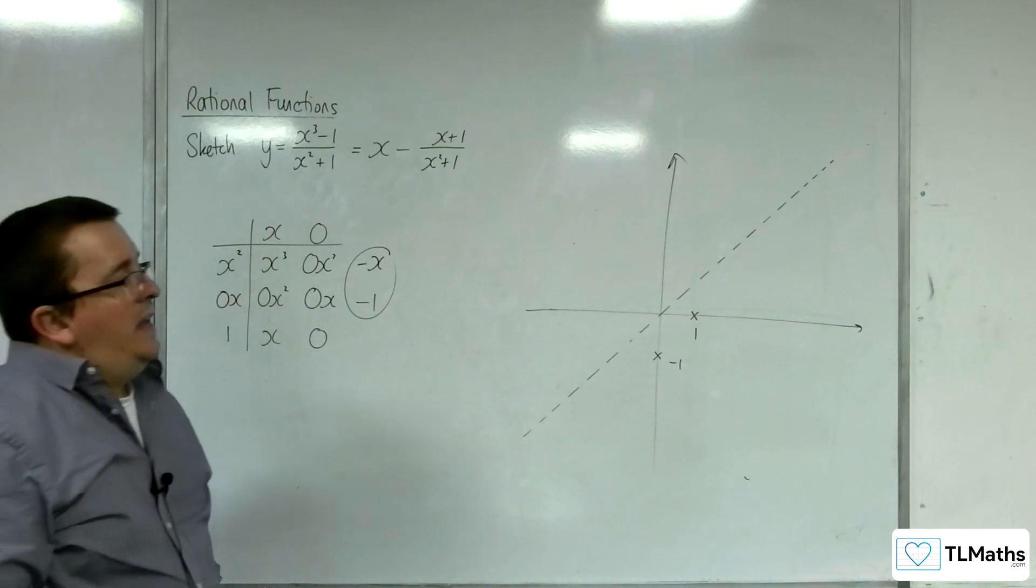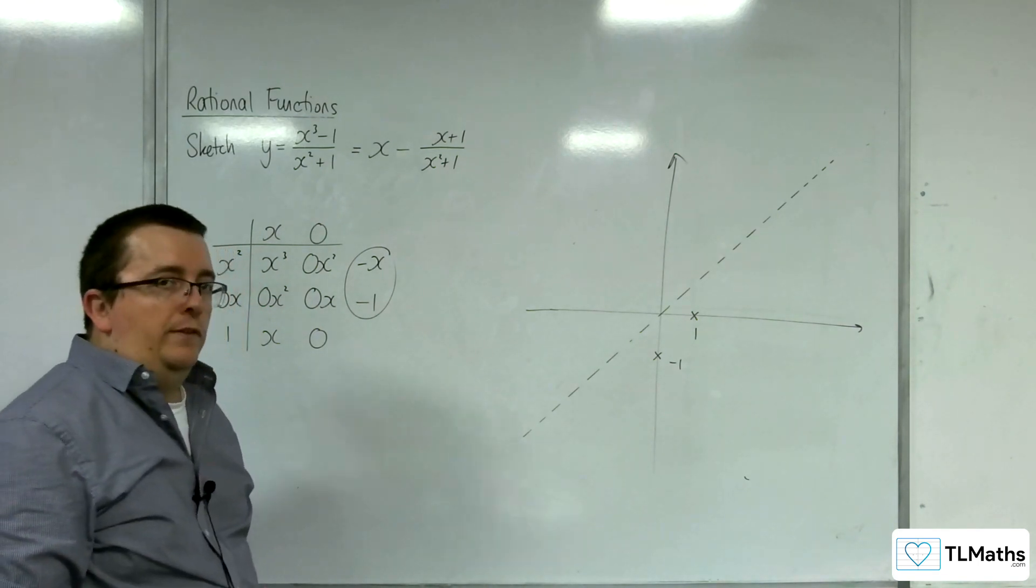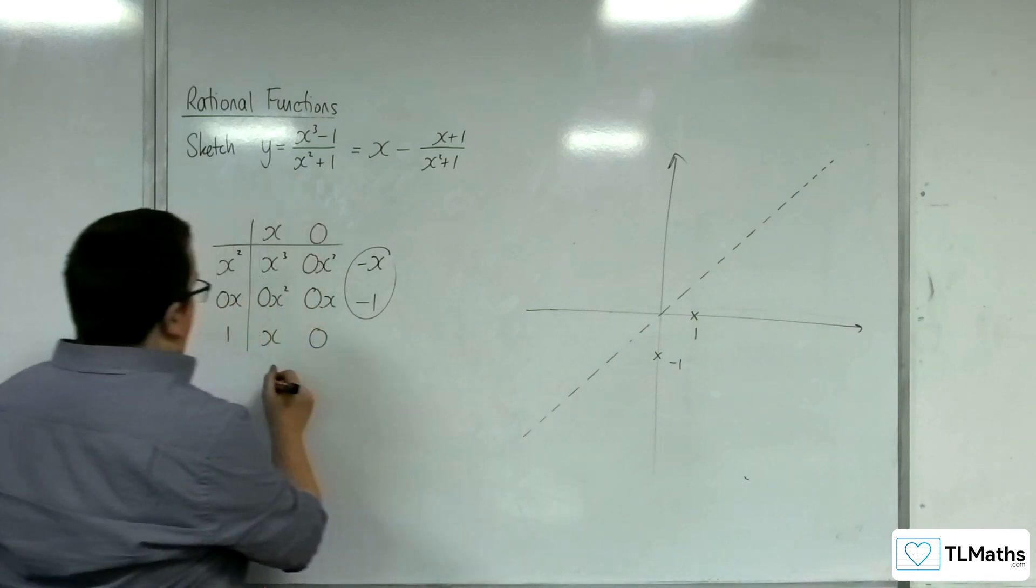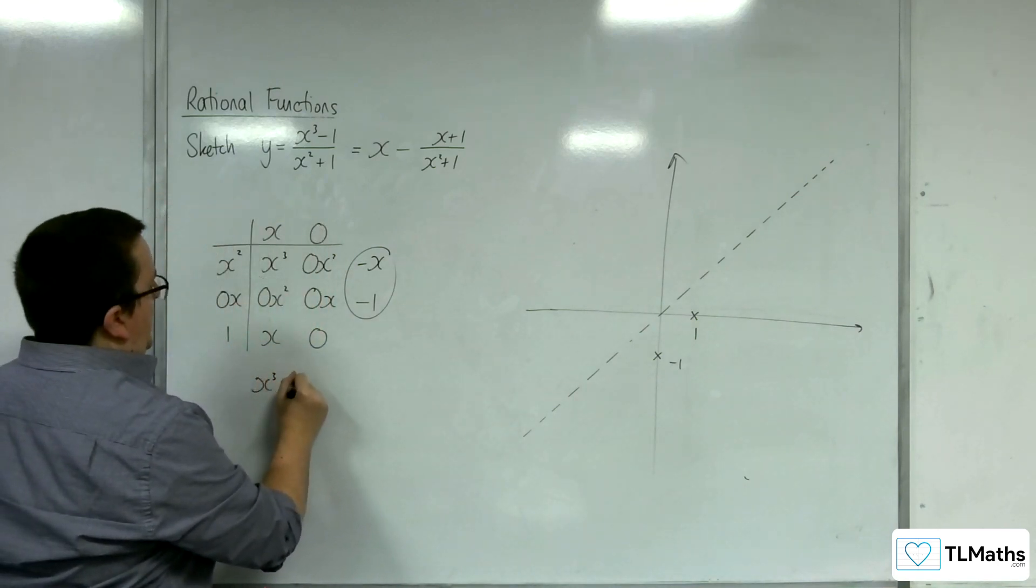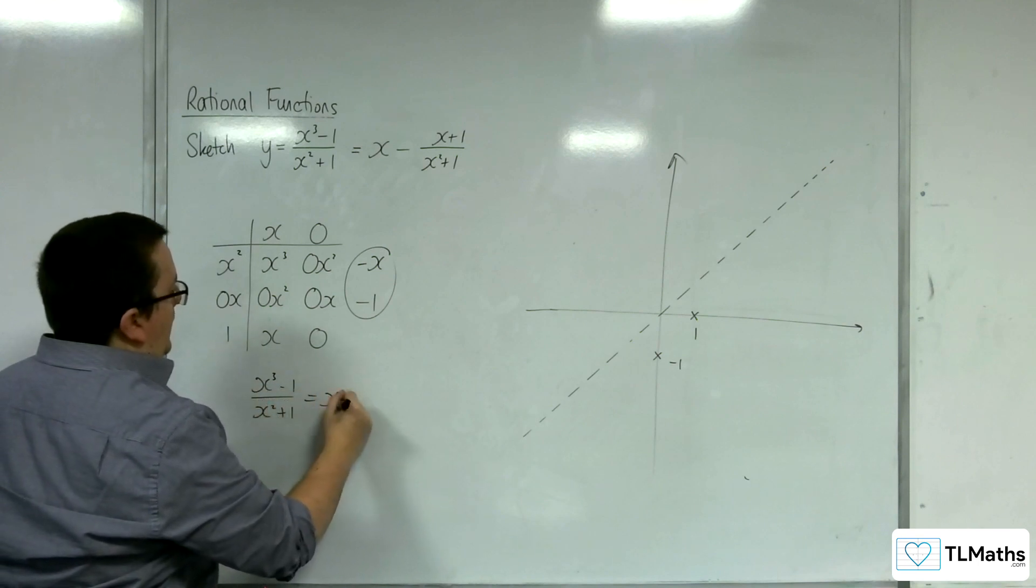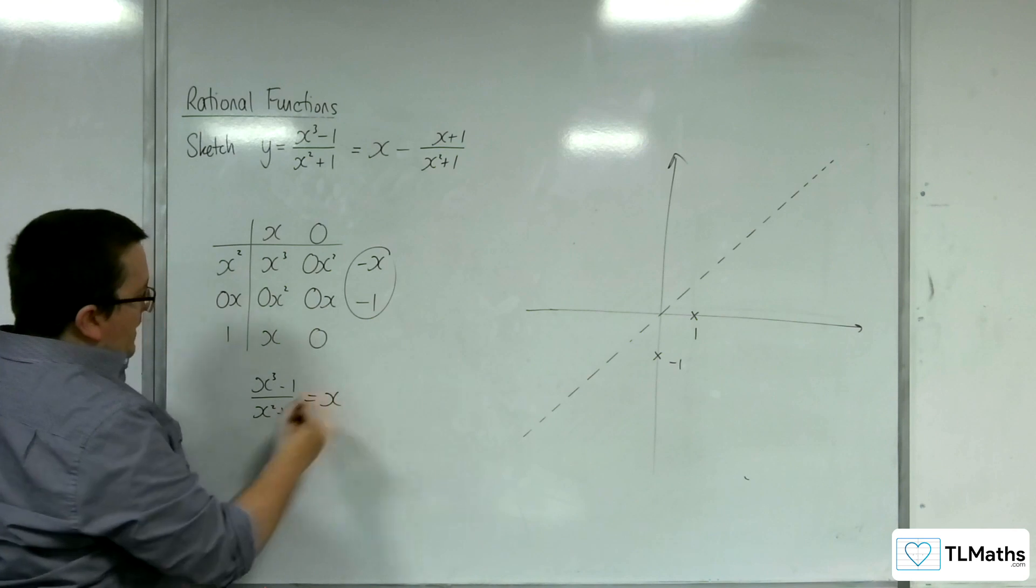Let's see if we can find any points where the curve crosses the oblique asymptote. So we need to solve x cubed, take away 1, over x squared plus 1, is equal to x. So multiply up by the x squared plus 1.